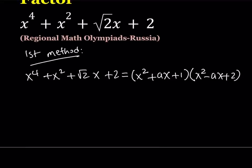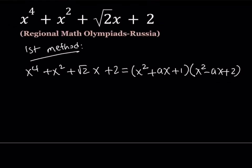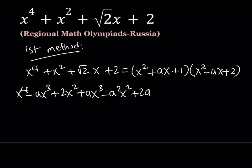So let's go ahead and distribute the right-hand side and see what we get from there. When you multiply, it's going to give you x^4 and then -ax^3. Just go ahead and distribute everything: 2x^2 + ax^3 - a^2x^2 + 2ax + x^2 - ax + 2.